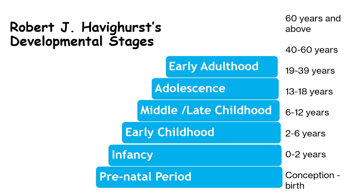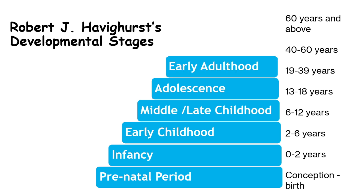Stage 6: Early Adulthood, late teens or early twenties to thirties. Early adulthood is about establishing independence, pursuing career goals, and forming intimate relationships. For instance, a young adult might start their first job, move into their own apartment, and begin a serious relationship, setting the stage for personal and economic stability.